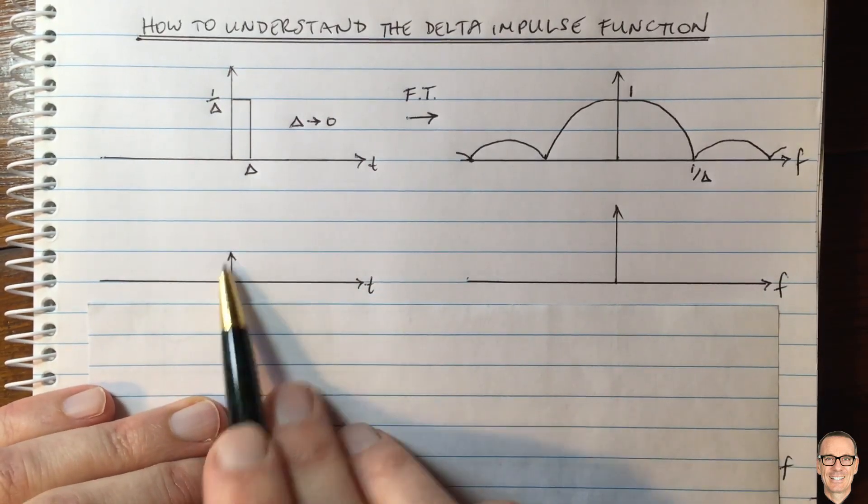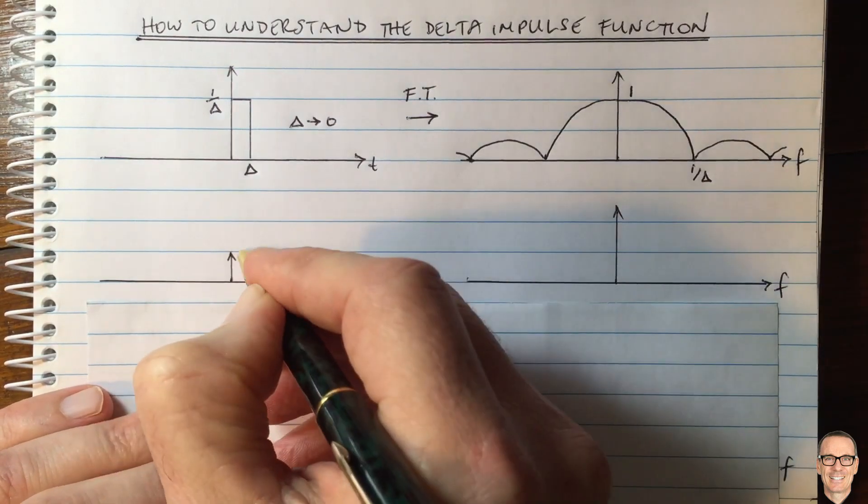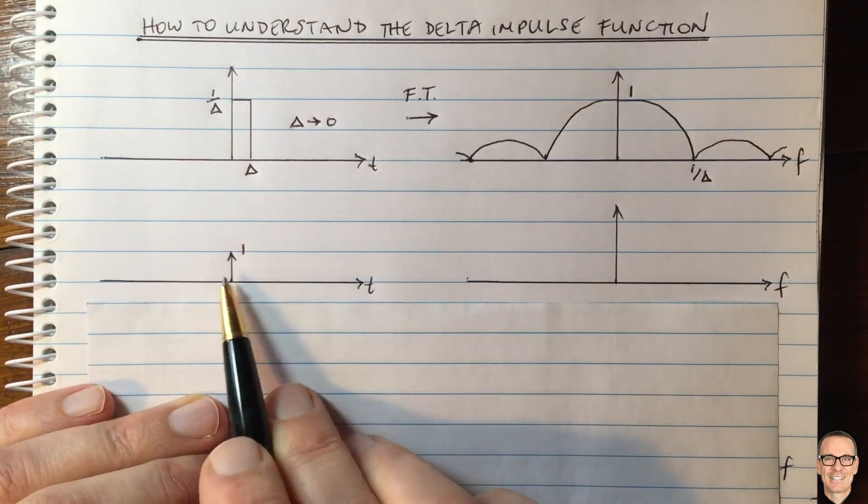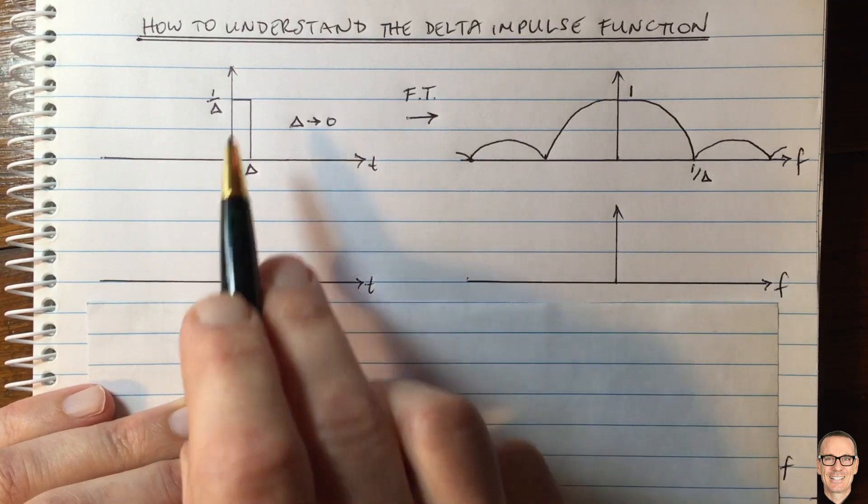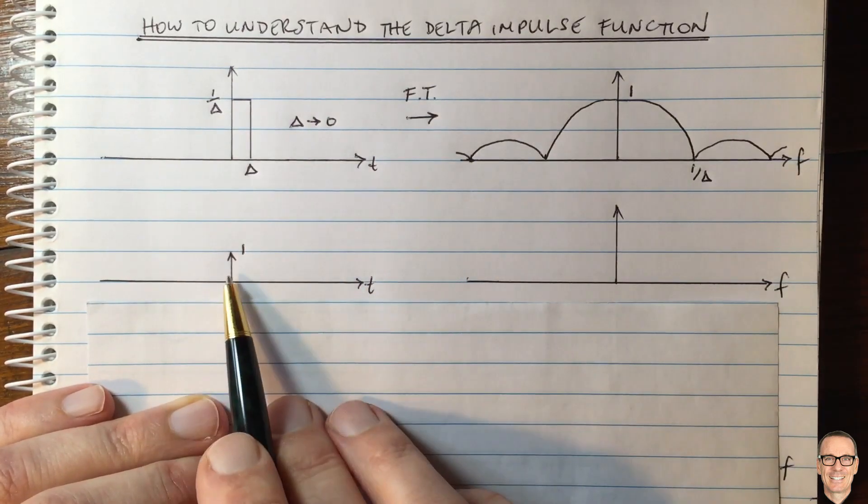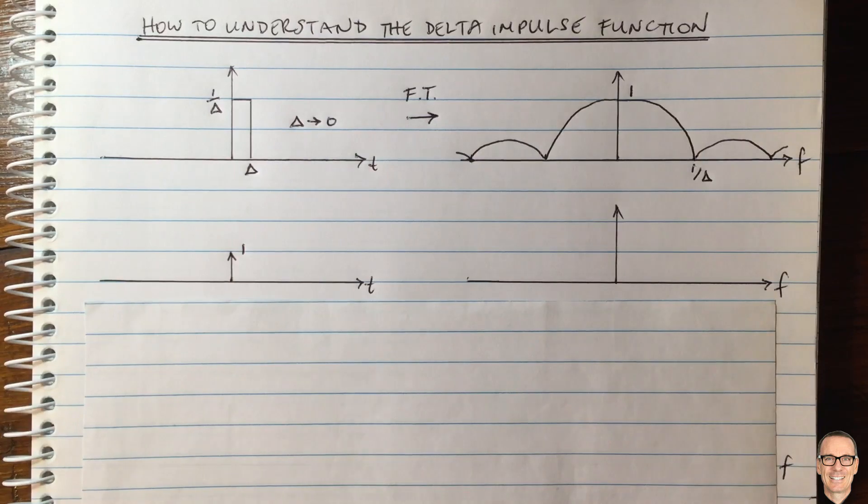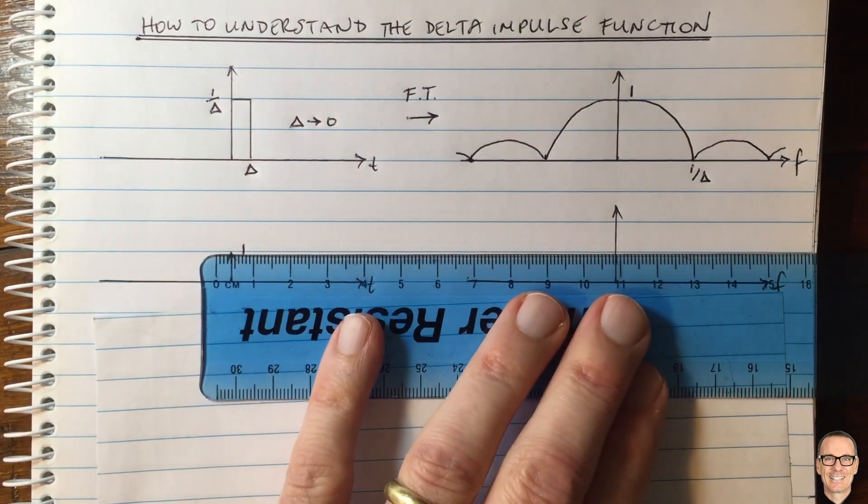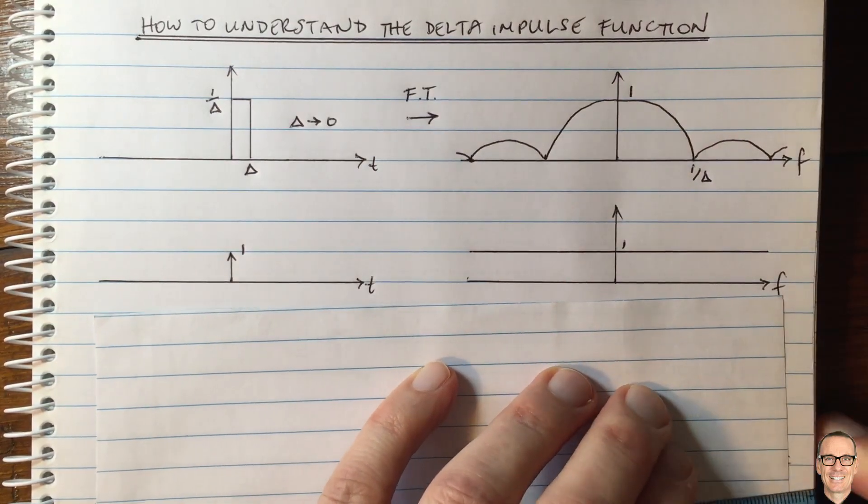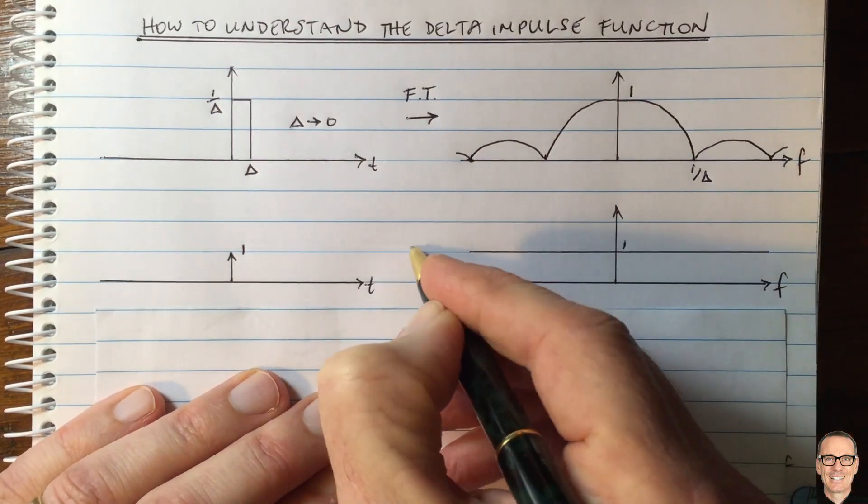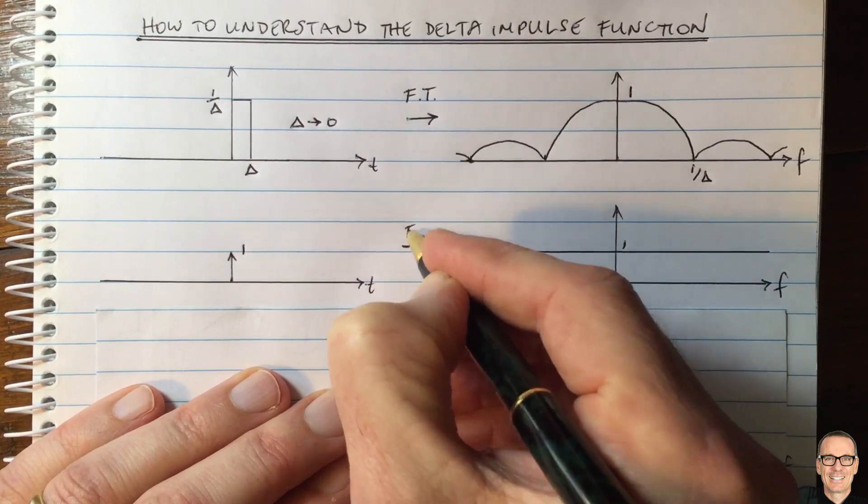We more commonly draw it as a delta function like this, and we put the number 1 next to it, which sometimes people think means the height of the delta function, but actually it's the area of the delta function. In the frequency domain, it's a constant value with a value of 1. This is the Fourier transform of the delta function.